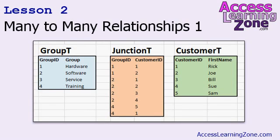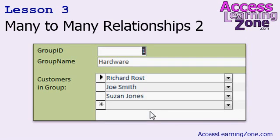In lesson two, we're going to learn the proper way to set up a many-to-many relationship between customers and groups using a junction table. We'll learn how to view what groups a customer was in. Now in lesson three, we'll learn how to open up a group and see which customers are in that group.